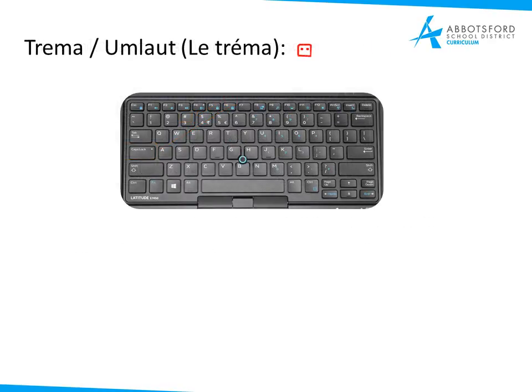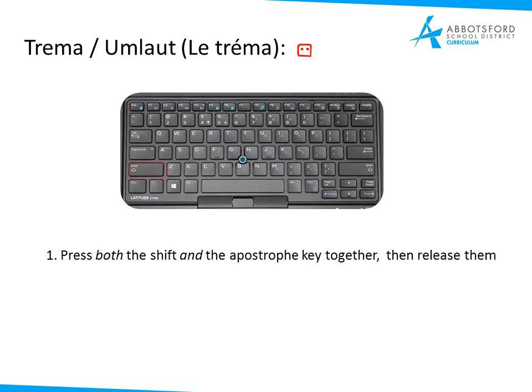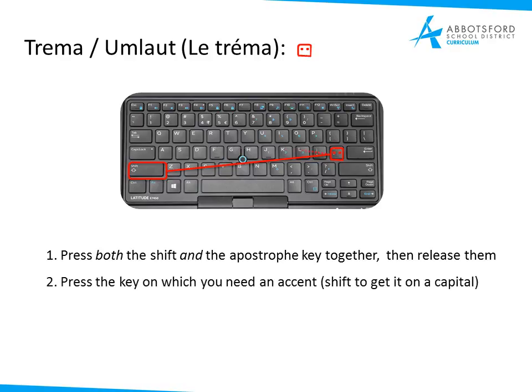The tréma or umlaut — the two dots above your letter — same deal. This time you're going to press both the Shift and the apostrophe key together, then release them. Your main keys to remember are the apostrophe key next to your Enter and the tilde key just below Escape. Then select the letter on which you want to put your accent.